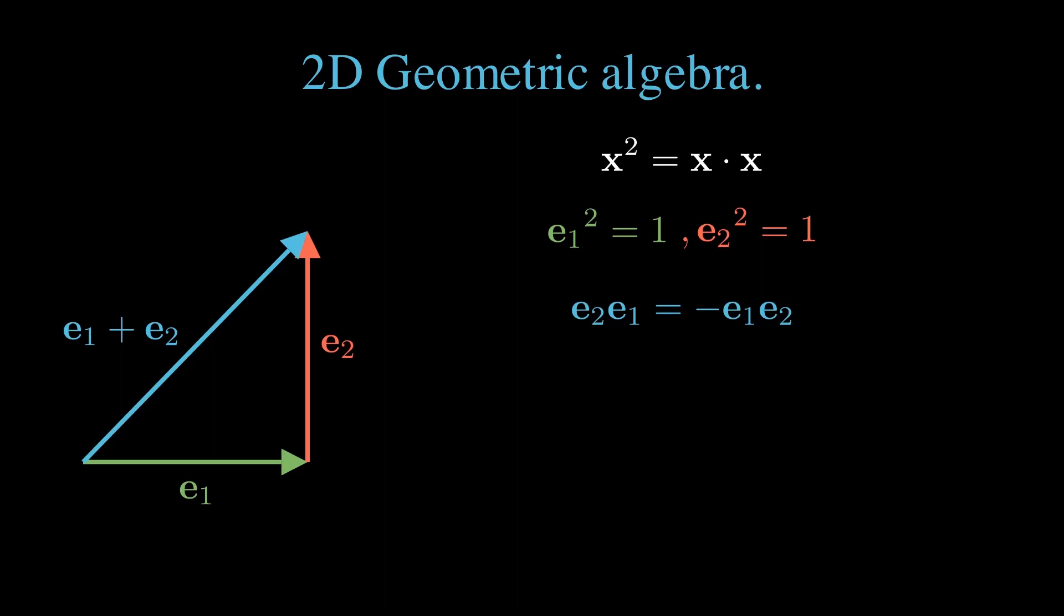In words, this means that the product of perpendicular unit vectors is anticommutative. Should we need to change the order of any two perpendicular unit vectors, we must also change the sign.